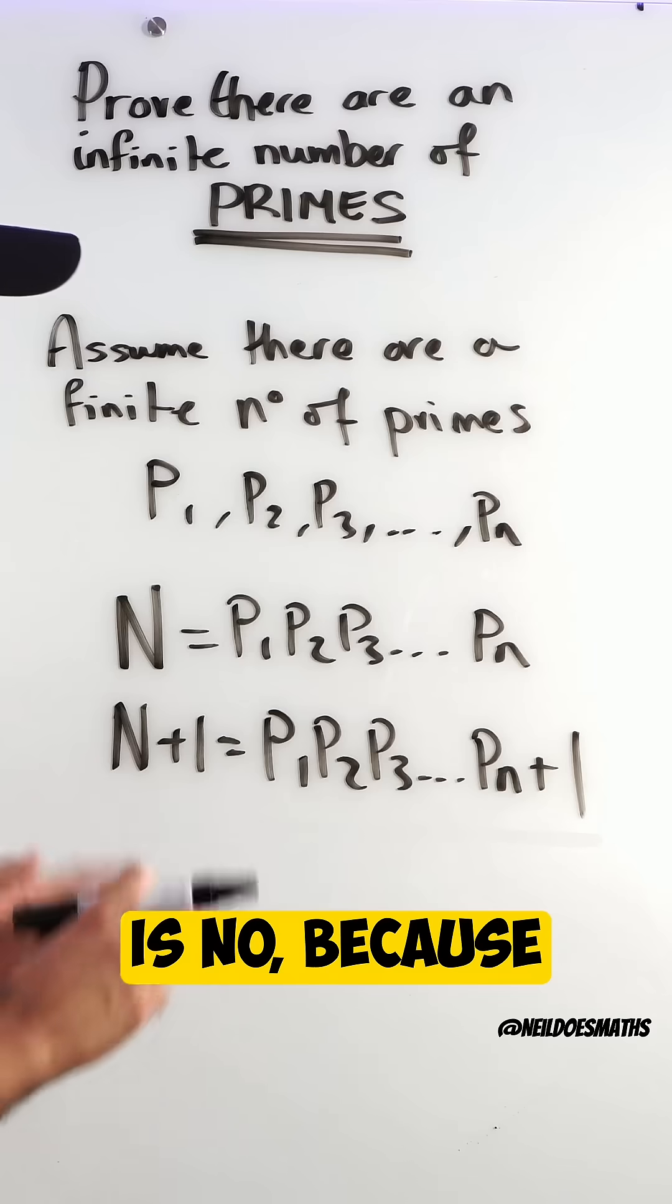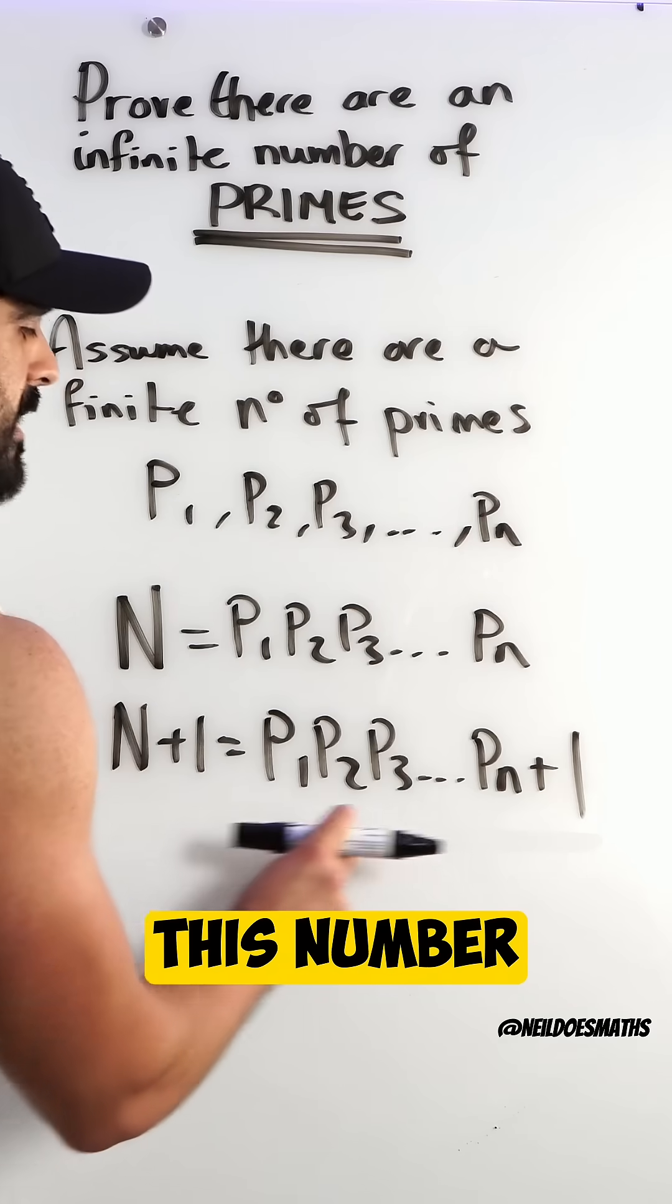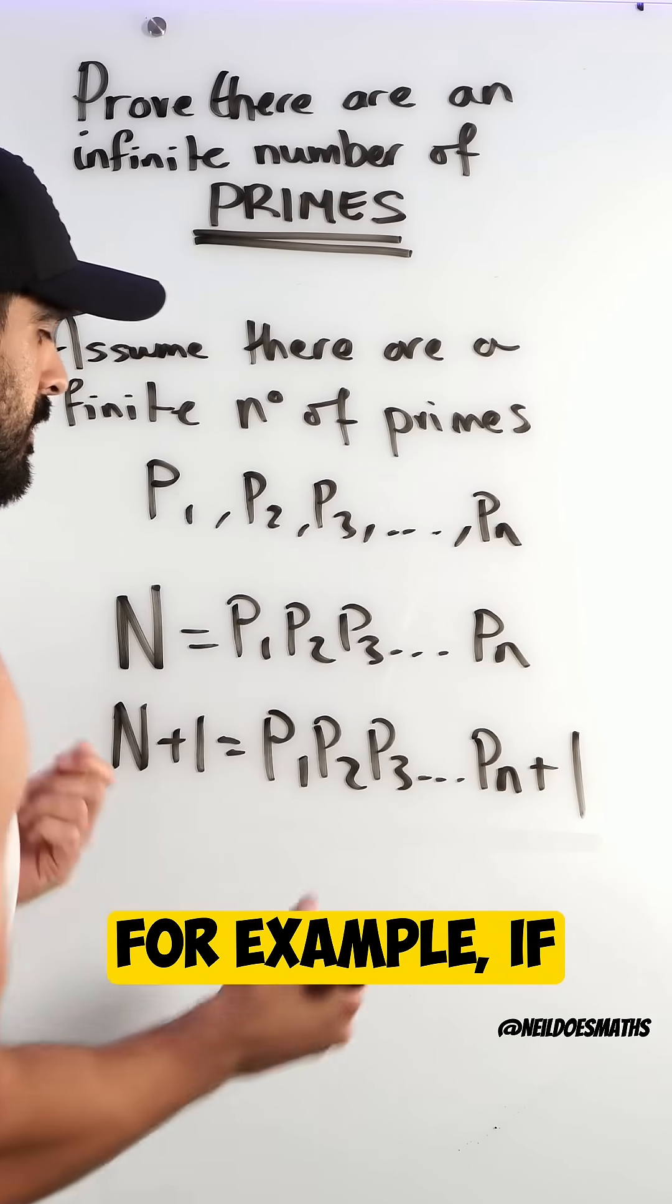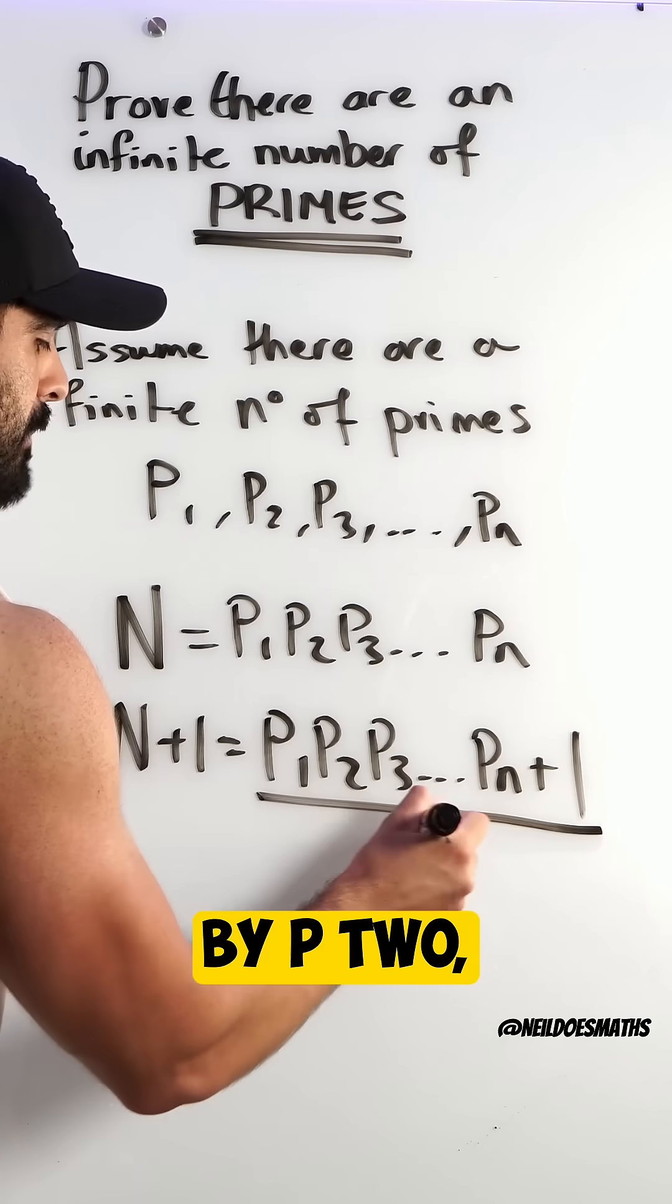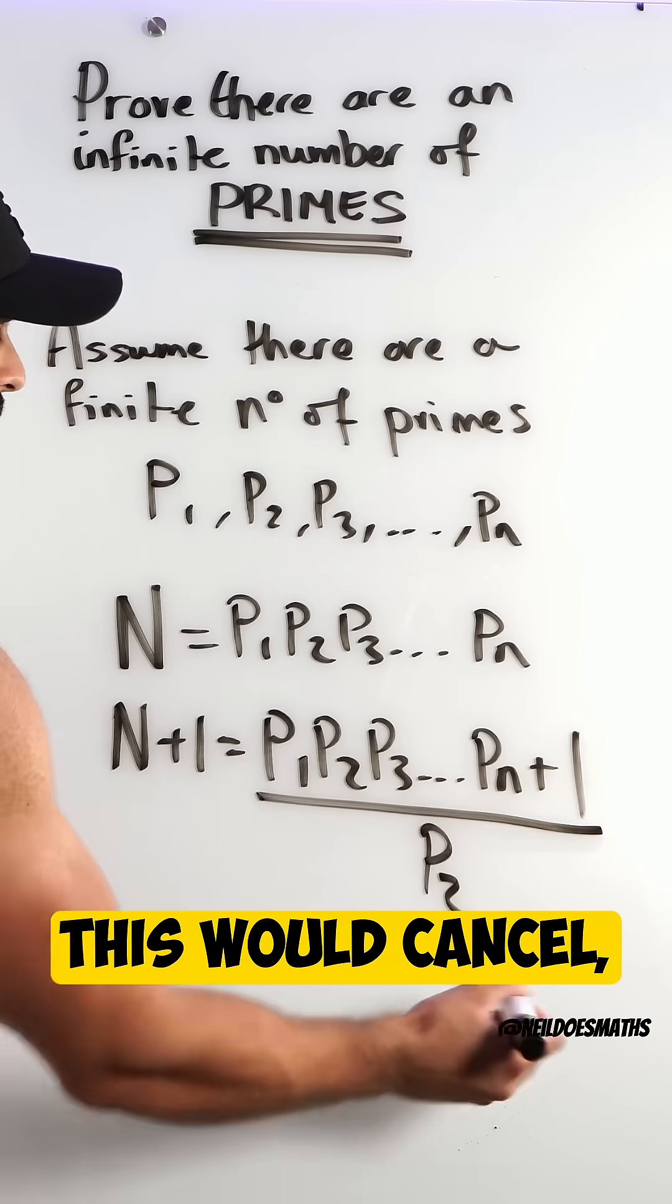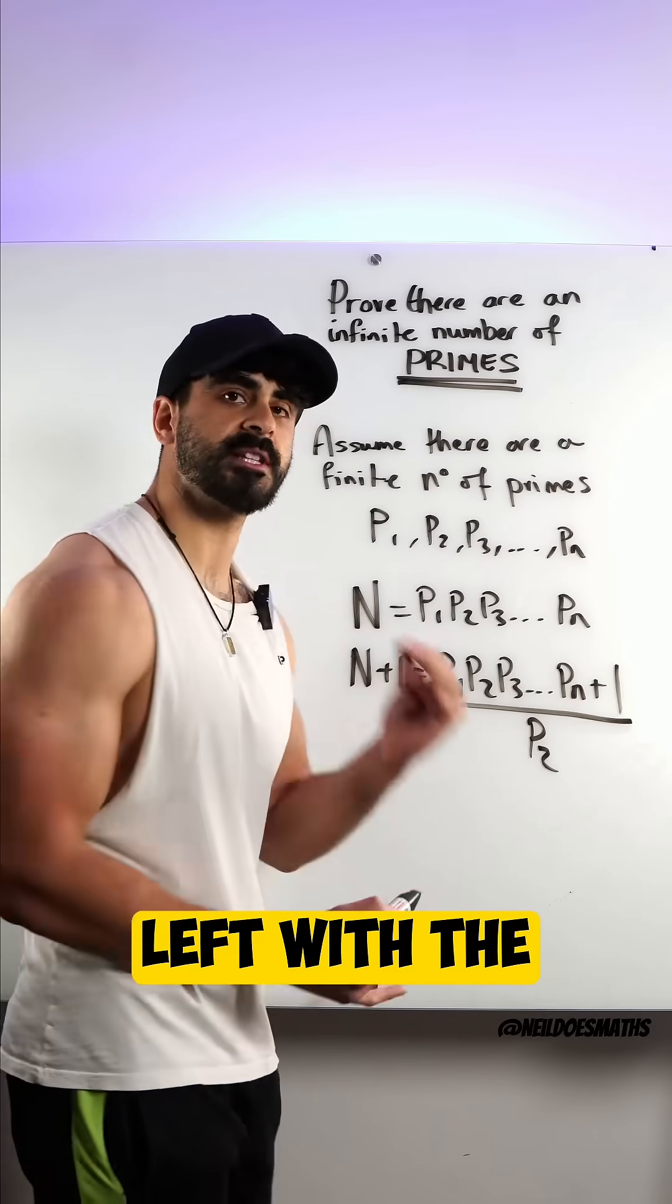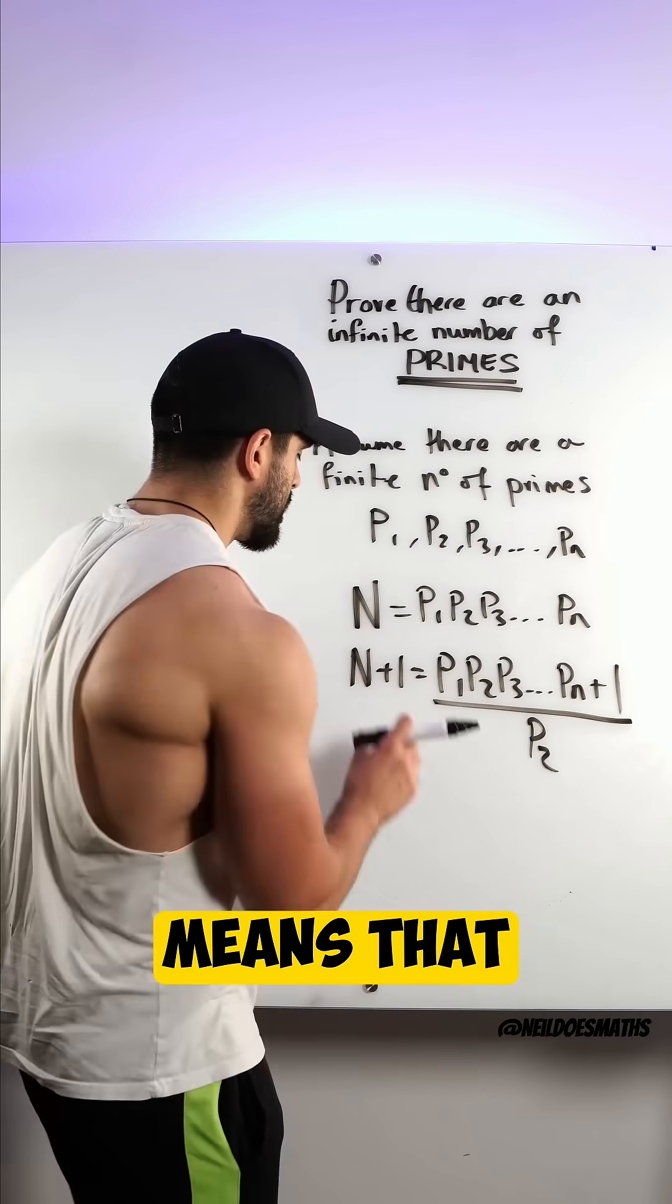For example, if I divide this by p2, this would cancel but you would always be left with plus 1 over p2. We are always left with a remainder, which means that this number cannot be written as a product of the primes that I said only exist, and this is a contradiction.